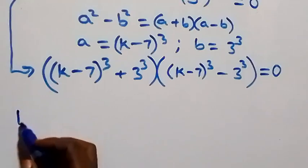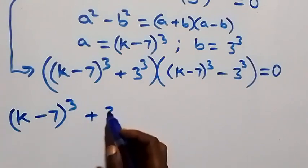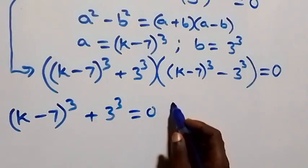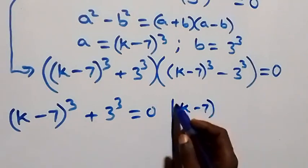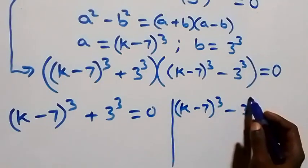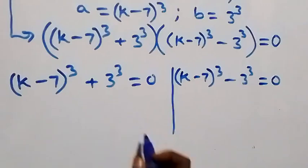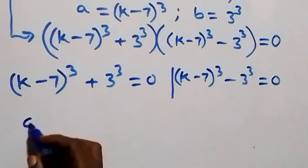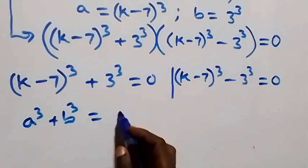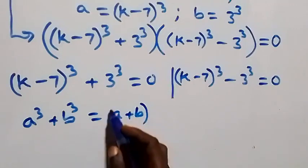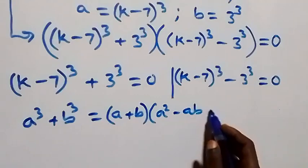The first case: k minus 7 raised to power 3 plus 3 raised to power 3 equals zero. The second case: k minus 7 raised to power 3 minus 3 raised to power 3 equals zero. For the first case, this follows from a cubed plus b cubed equals a plus b times the bracket a squared minus ab plus b squared.